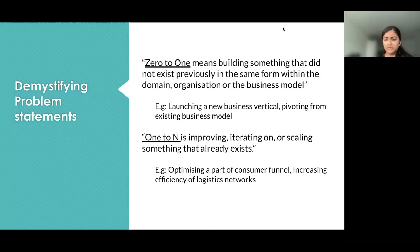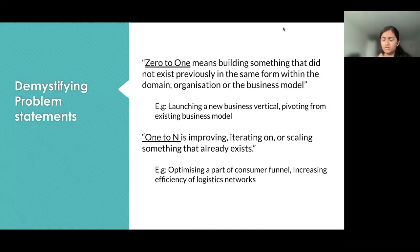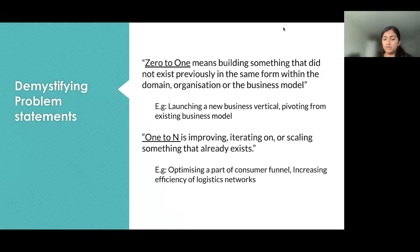1 to N is a type of problem statement where you have a foundation built in, but you're trying to work on improving it, iterating, or scaling something that already exists. For example, working in a B2C organization optimizing one part of the consumer funnel in terms of conversion or growth, a personalization problem, or improving optimization efficiency of logistic networks in food tech — these are all 1-to-N problem statements.